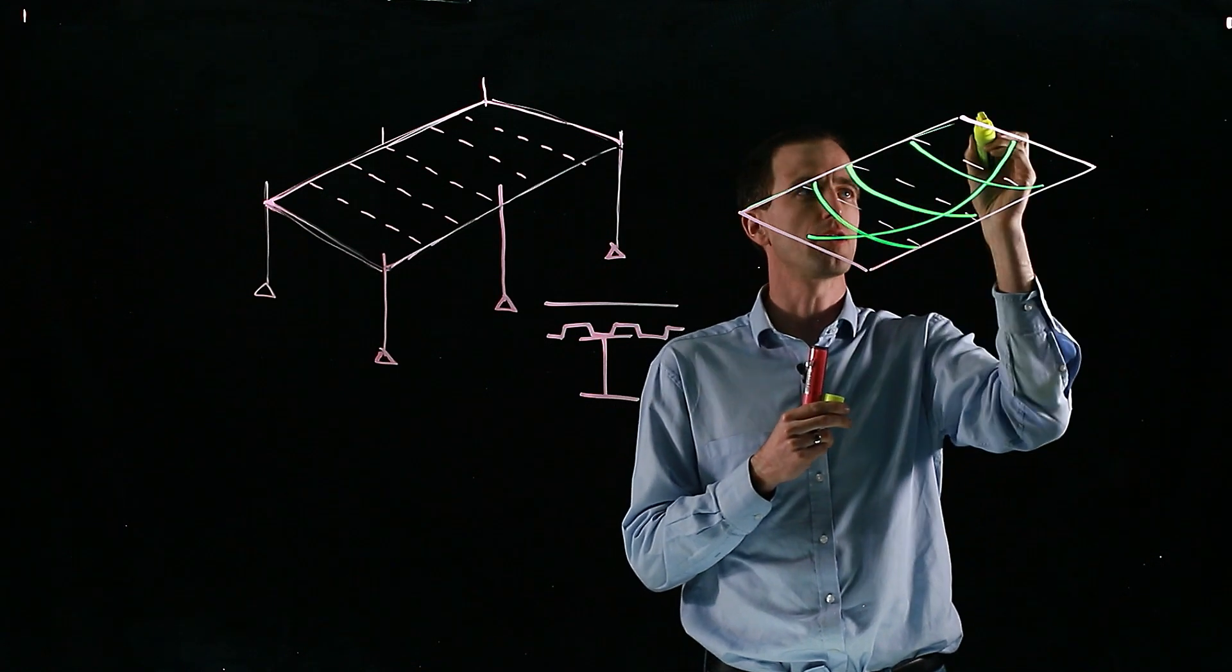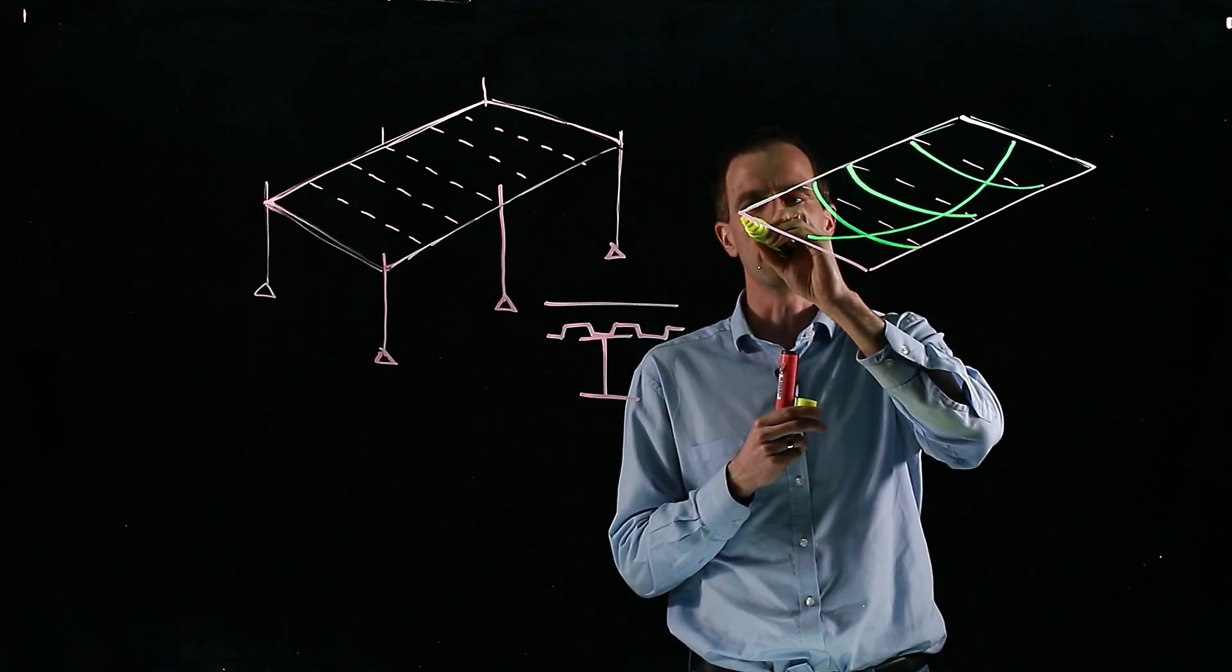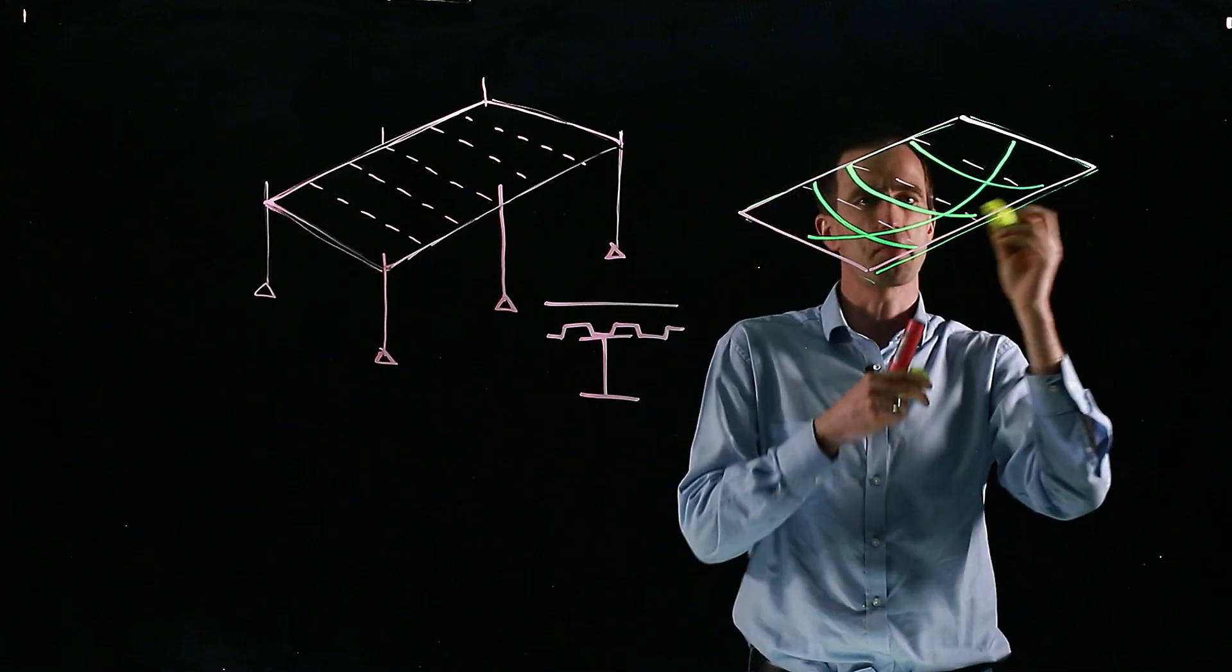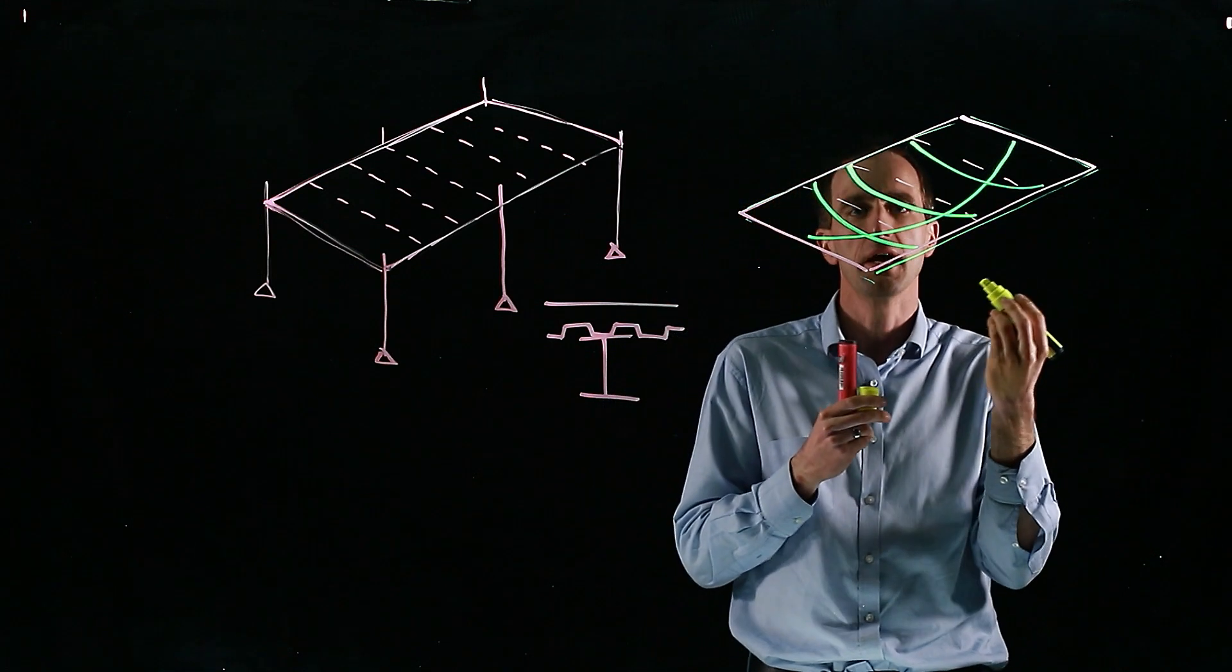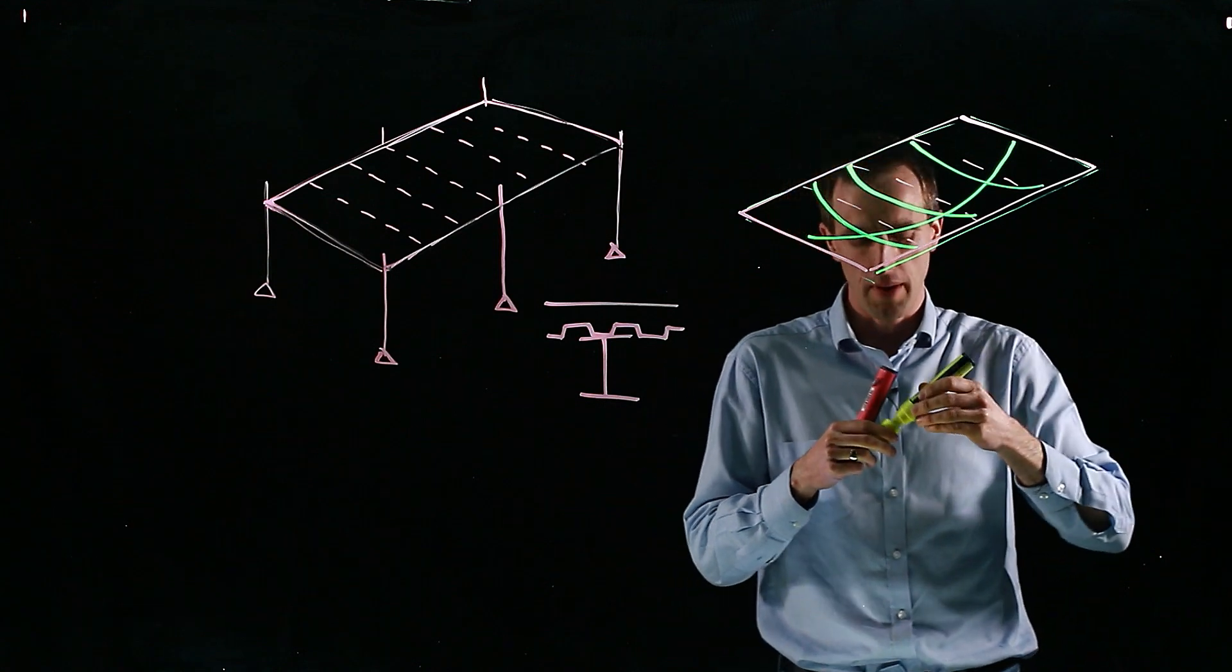So it creates loads on these perimeter beams all the way around, and even though those secondary beams may be what you might think is failing, they're well beyond what capacity they can take.